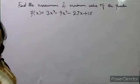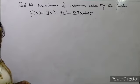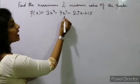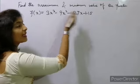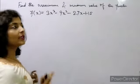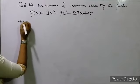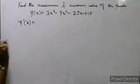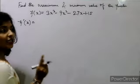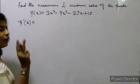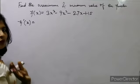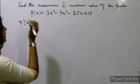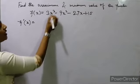Here we have a question in which we have to find out the maximum and minimum value of a function. f(x) is given: f(x) = 3x³ - 9x² - 27x + 15. First, what we'll do is find out f'(x), because f'(c) should be equal to 0 for both maximum and minimum conditions.